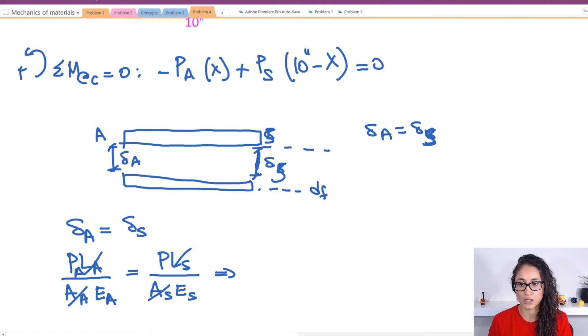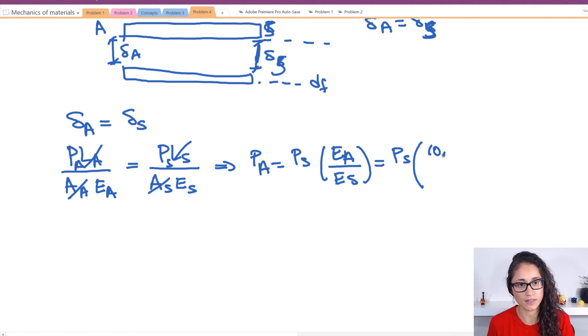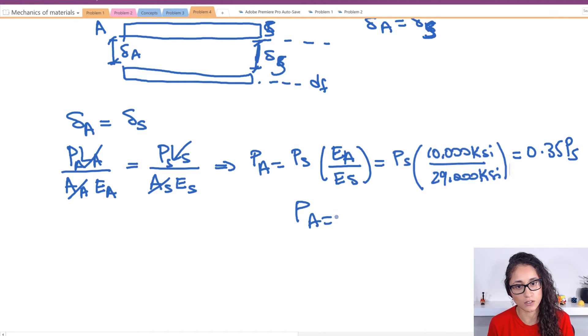So what we are left with, we are left with PA is equal to PS times EA over ES. EA was given as 10,000 over 29,000 and so this is equal to 0.35 PS. So I have PA is equal to 0.35 PS. So let's call this equation 2.